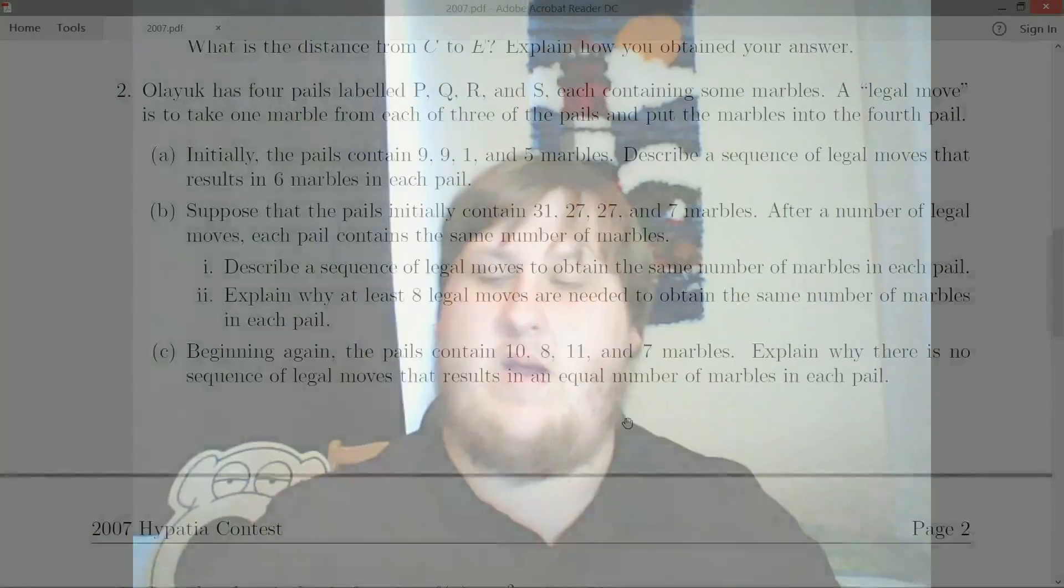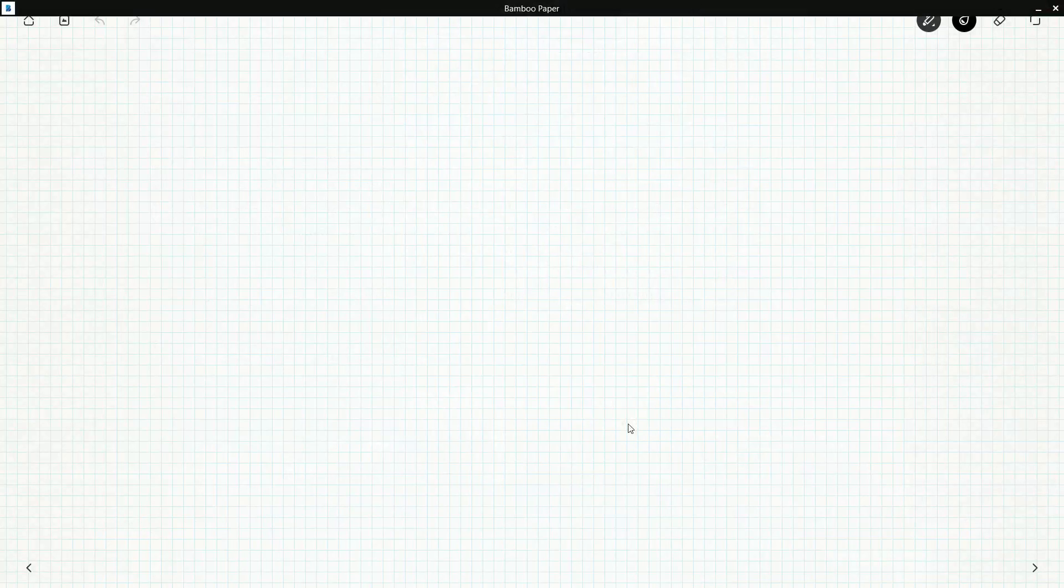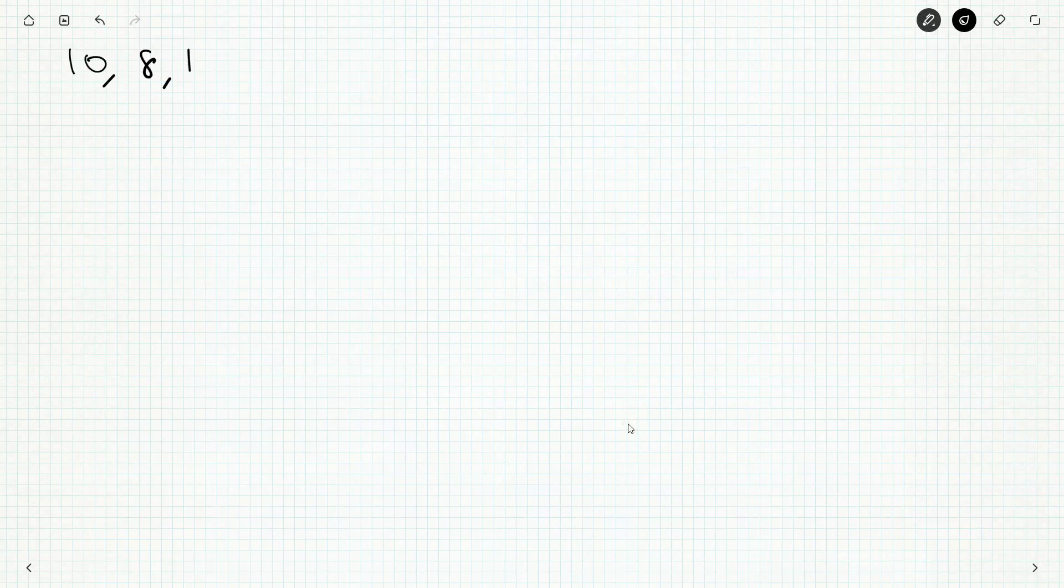The challenge for this one is we don't know what legal moves we want to take. You could make a giant tree diagram of all the legal moves and just show, you know, eventually you're never going to settle down on 9, 9, 9, 9. But that's going to take a long time. What you should be doing is sort of experimenting about and saying, well, what's different with these starting numbers than any of my previous starting numbers?